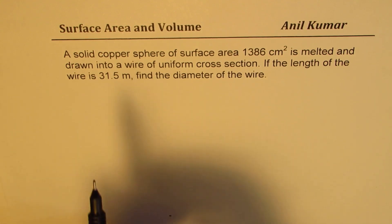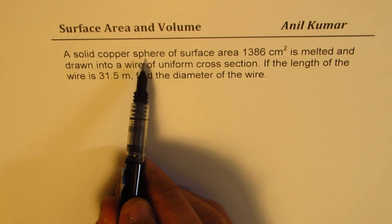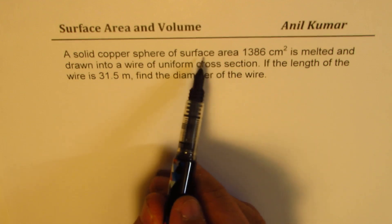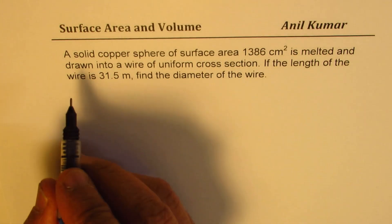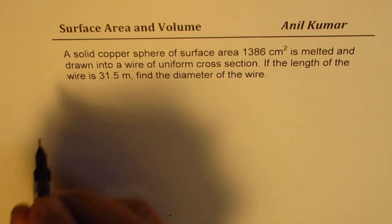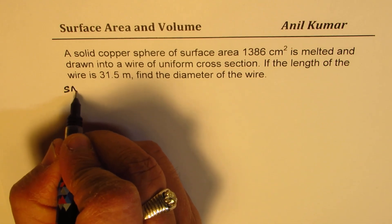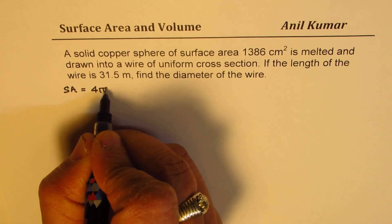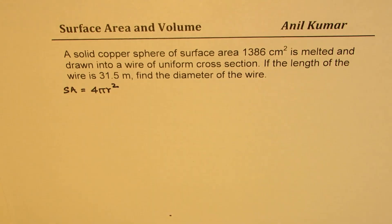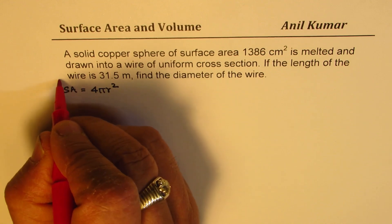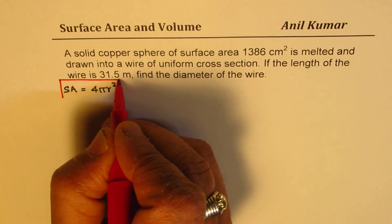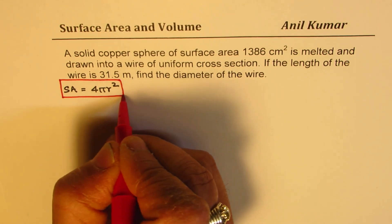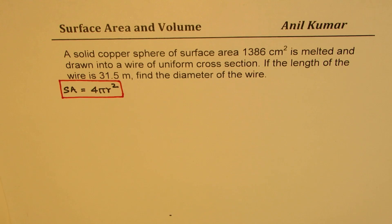We are given a solid sphere with surface area. So what is the surface area of a sphere? The formula is surface area of a sphere is 4πr². That's the important formula. We are given its value.